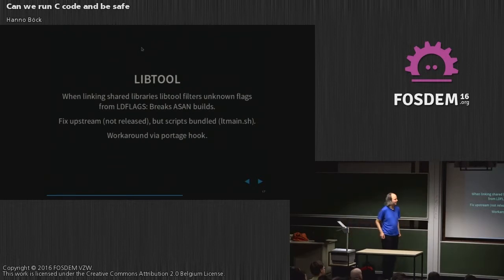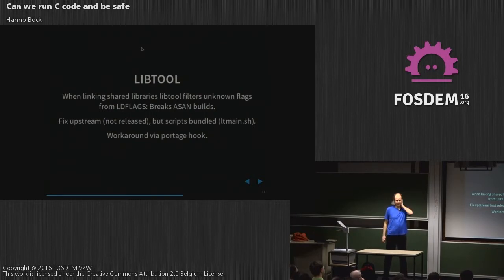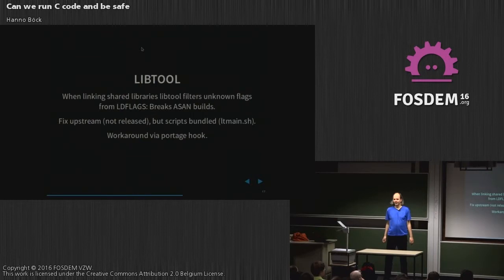I had all kinds of compile issues. One of them was libtool: when you link a shared library with libtool, it filters the linker flags and says it will only allow linker flags it knows are good. This ends up breaking a build with AddressSanitizer, because AddressSanitizer needs to link against libasan, so if you strip the AddressSanitizer flag from the linking step, the linking fails. This has now been fixed, though there's no release yet. The tricky thing is that libtool scripts are bundled with packages, so deploying this fix will take time. What I actually did was add a function hook to Portage that looks for these scripts and patches them on all packages.